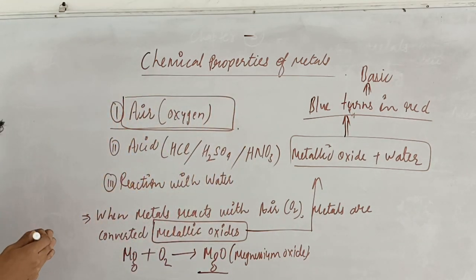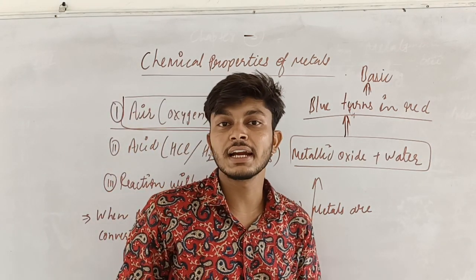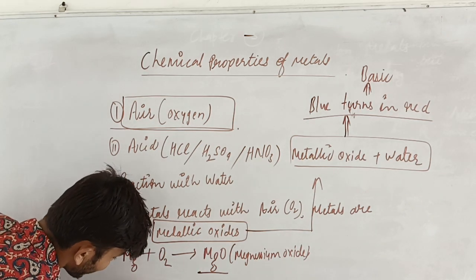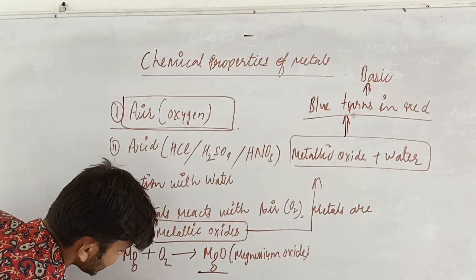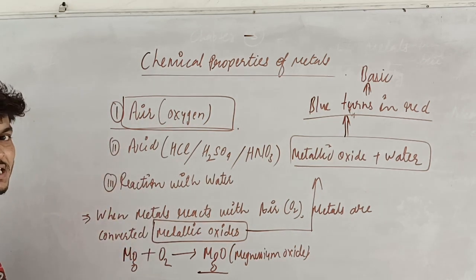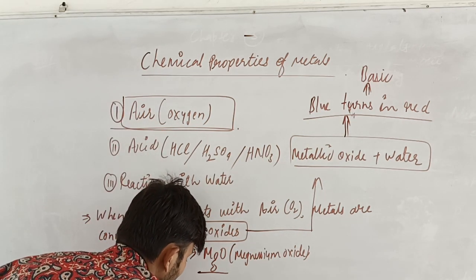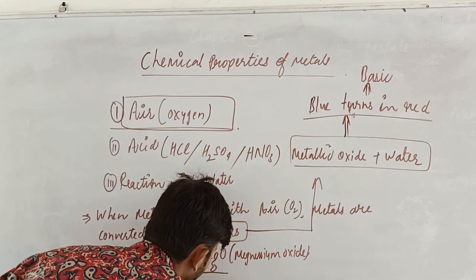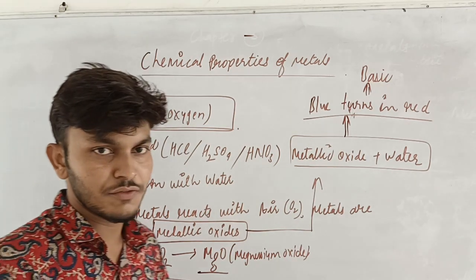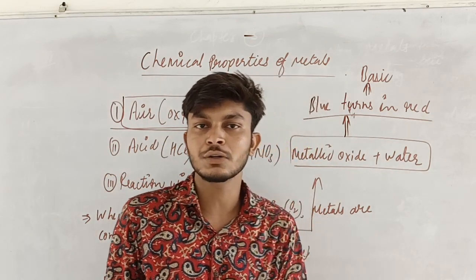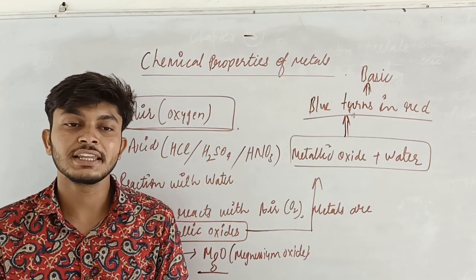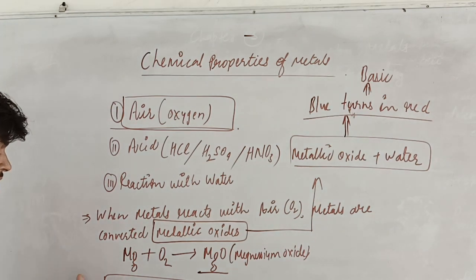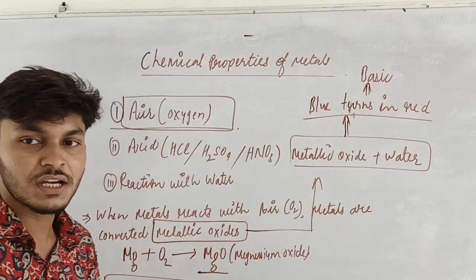There are many metals in nature which easily react with air, like sodium and potassium. We should always keep sodium and potassium in kerosene, because if you keep these two metals in an open place they will react with atmospheric air and can burst.